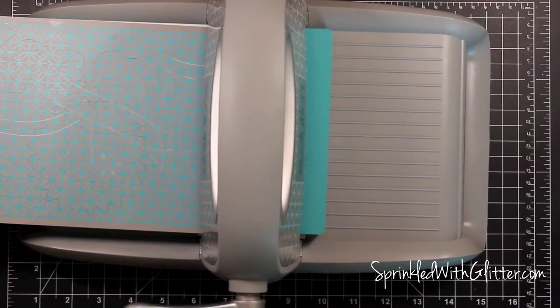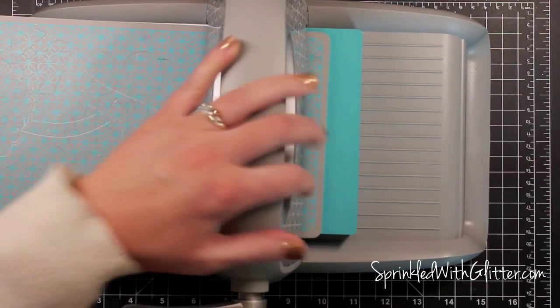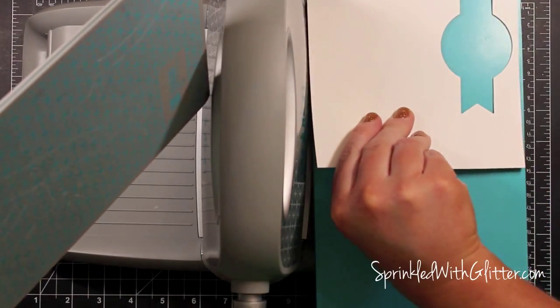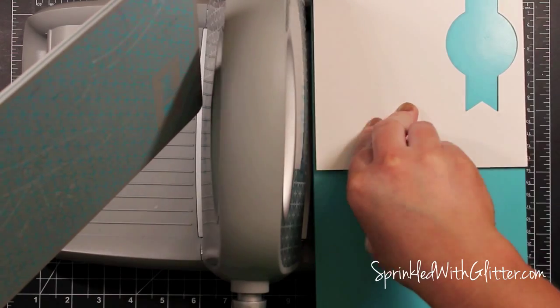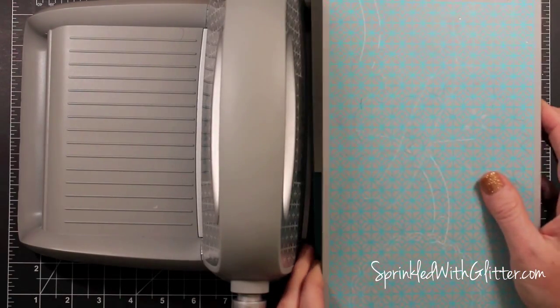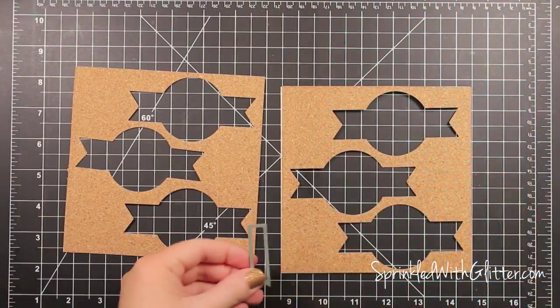Now I die cut a few of these because I'm planning on making a card set with this. So once I had die cut the first one, I just flipped it over and that magnetic platform kept that in place for me, and just put that A-plate right back on top again and die cut again.